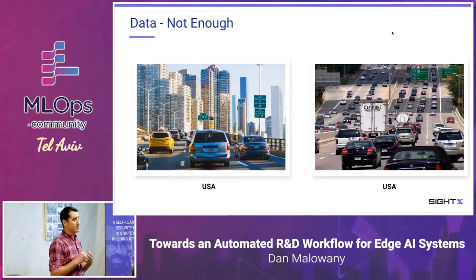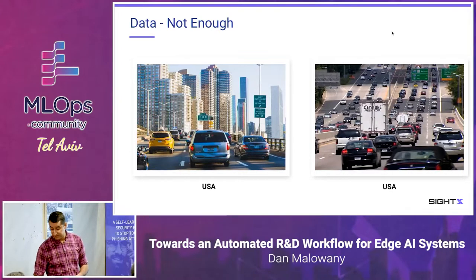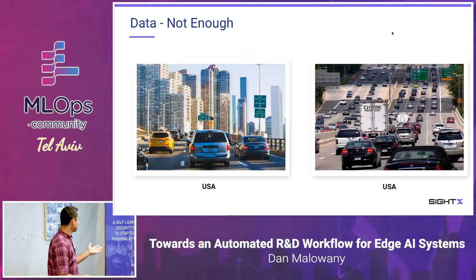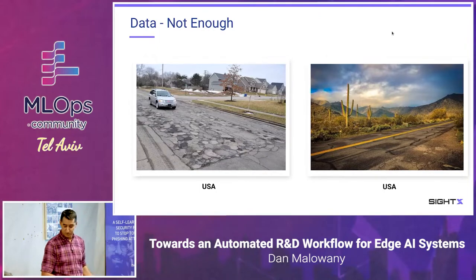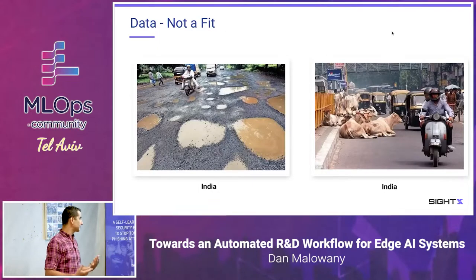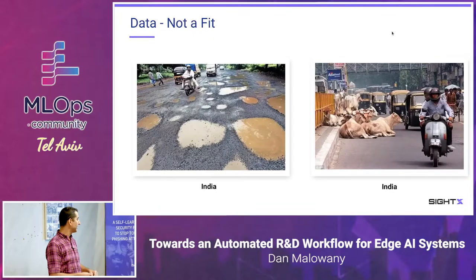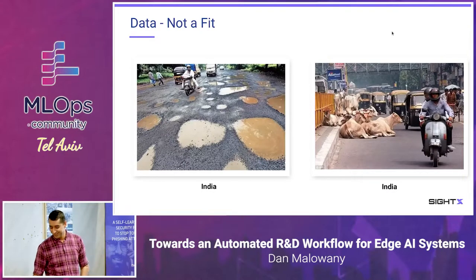Why is it important to analyze the entire process of data? Because many times you don't have enough data. If you want a solution that works for autonomous vehicles and you have images from US roads, then you deploy your platform and it sees something completely different. If you don't have that kind of data in your model, it will not know what to do. Sometimes the data just doesn't fit — in India you have rickshaws, cows in the road, ponds in the road — and you need to be able to work in those kinds of conditions.